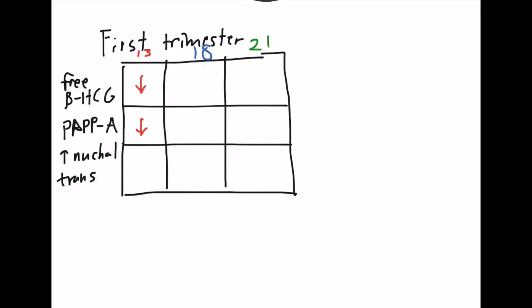What does Patau look like? You're going to have a decrease in free beta HCG, a decrease in PAPPA, and increased nuchal translucency. Exact same thing for Edwards. But notice that Down syndrome is a little bit different. You're going to have an increase in beta HCG, which will actually carry over in the second trimester test as well.